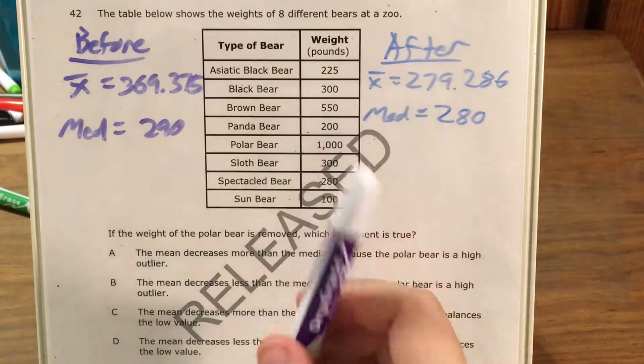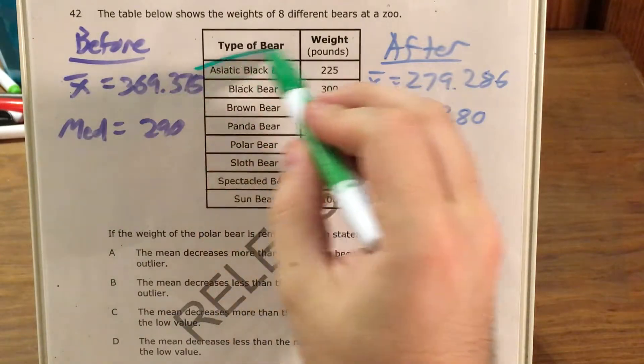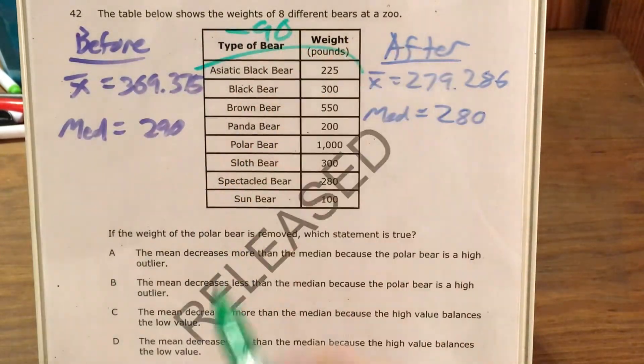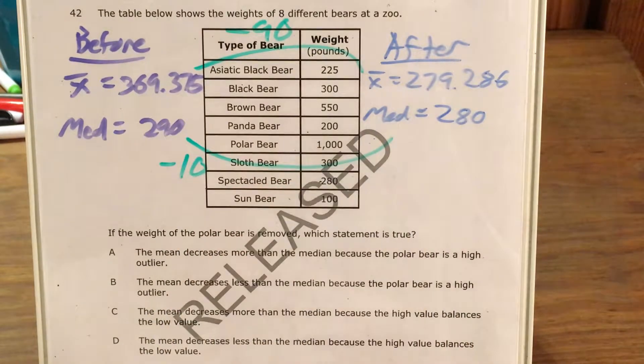So 369 to 279, that's a difference of about 90. So let me use a green marker for that. Mean decreased by about 90. The median decreased by exactly 10. So the mean decreased more than the median. So anything that says the mean decrease is less than the median is out as a possible answer choice.